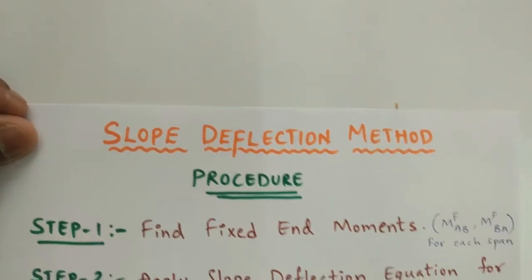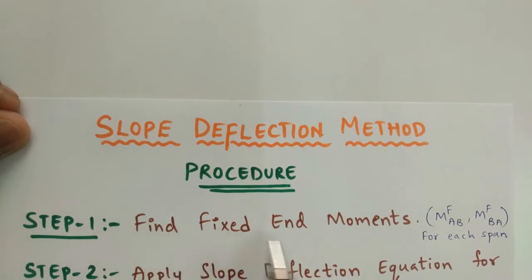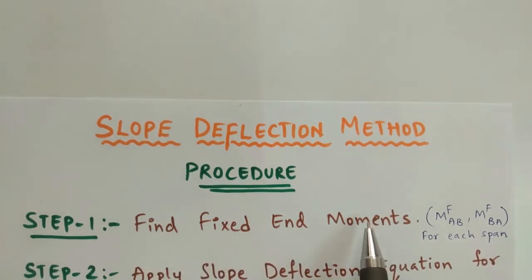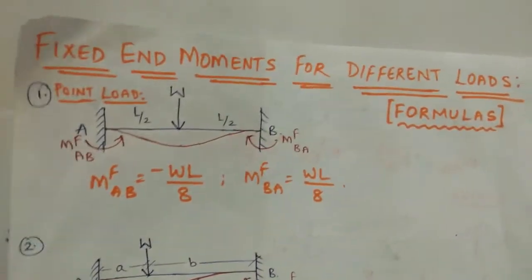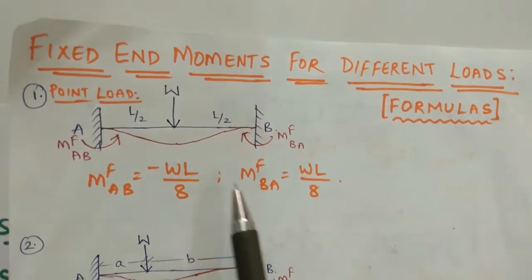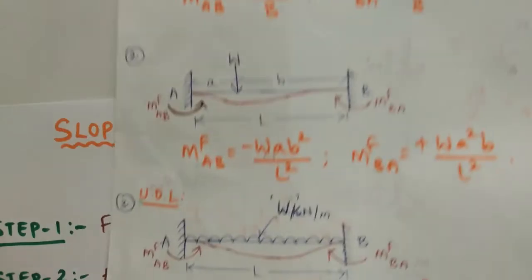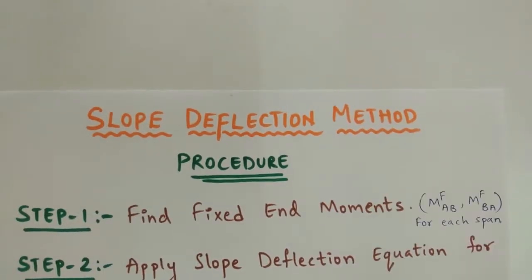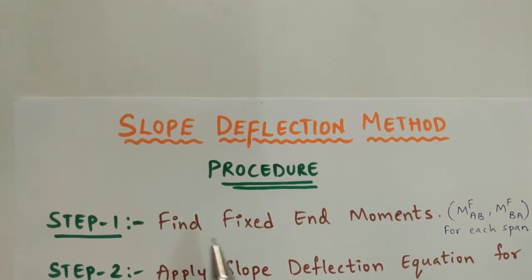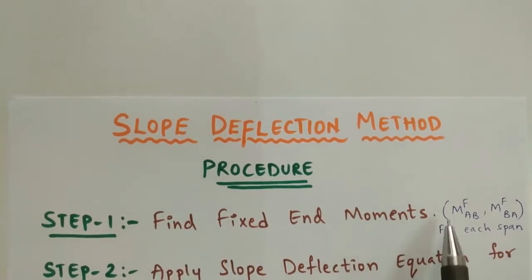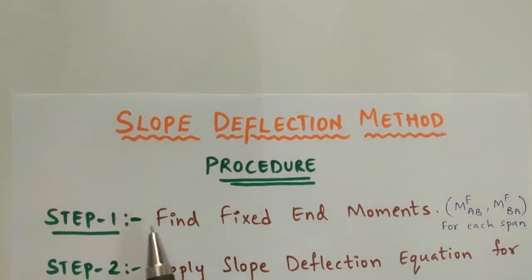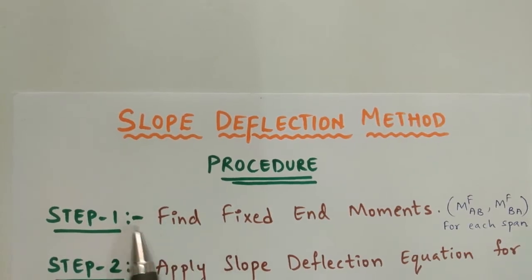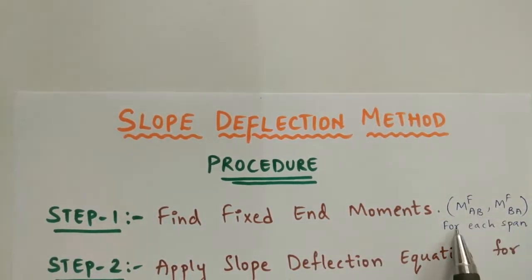In the first step, you have to find the fixed end moments. I have already explained in the previous video how to find the fixed end moments for different loads, and different formulas I have given. If you have not watched the video, I will put the link in the description. The first step for the slope deflection method is to find the fixed end moments MFAB and MFBA for each span.